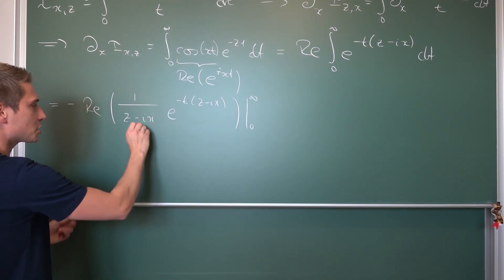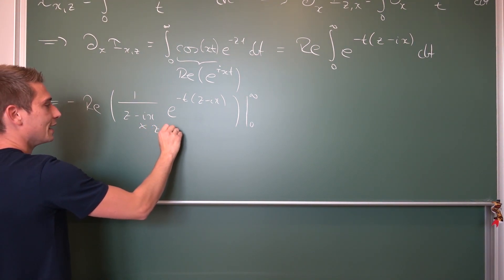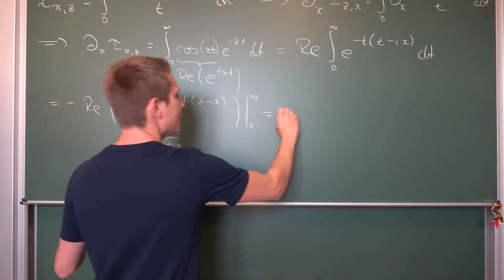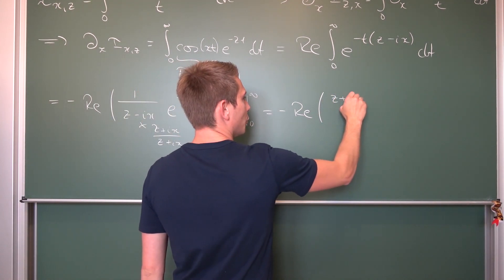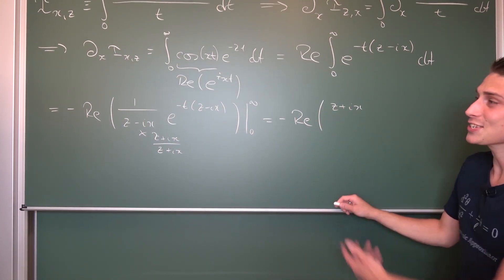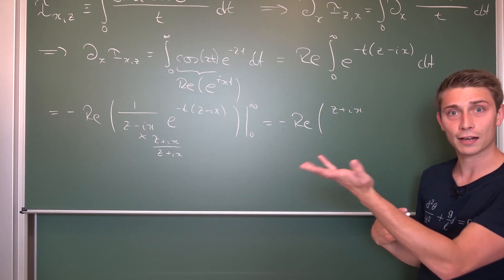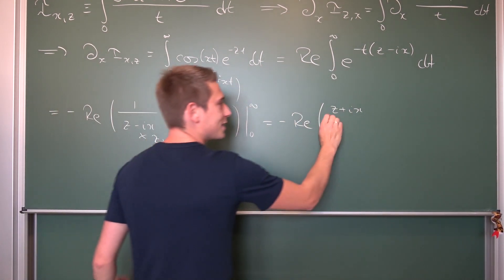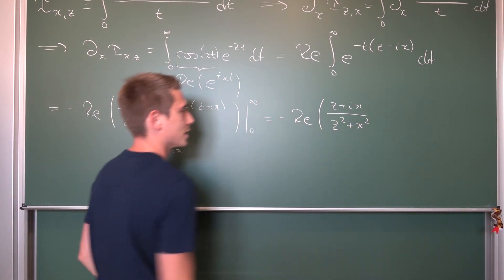We are going to multiply by (z + ix)/(z + ix), leaving us with negative the real part of (z + ix) on top. Down below we get the difference of squares, meaning overall this is just the magnitude of the complex vector squared: z² + x². This is just what's going to happen.